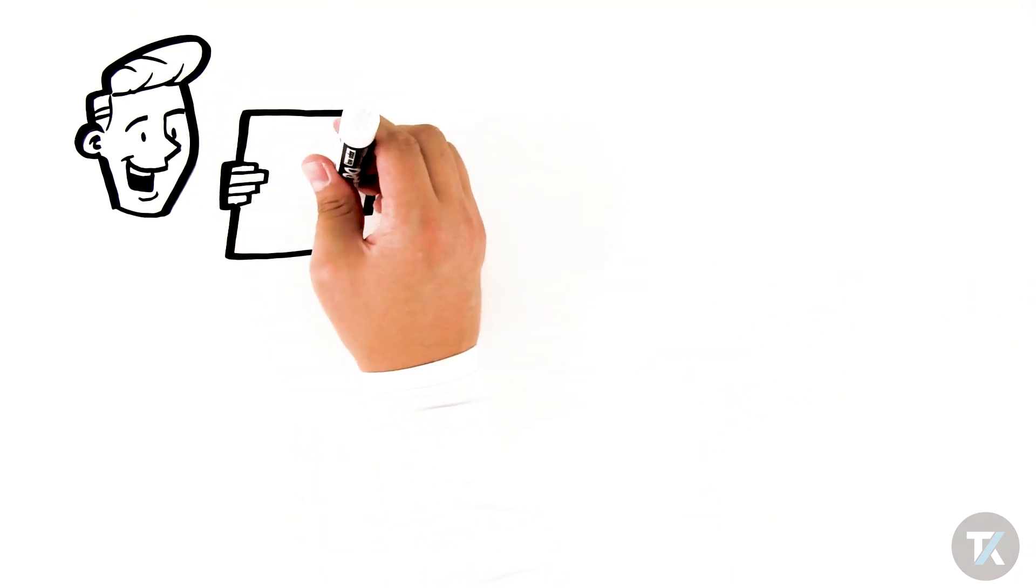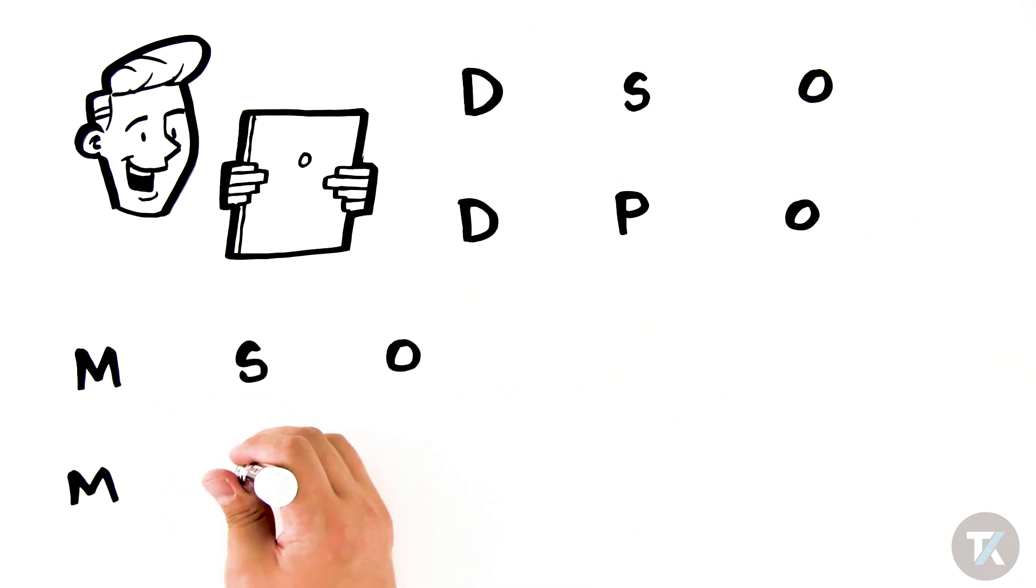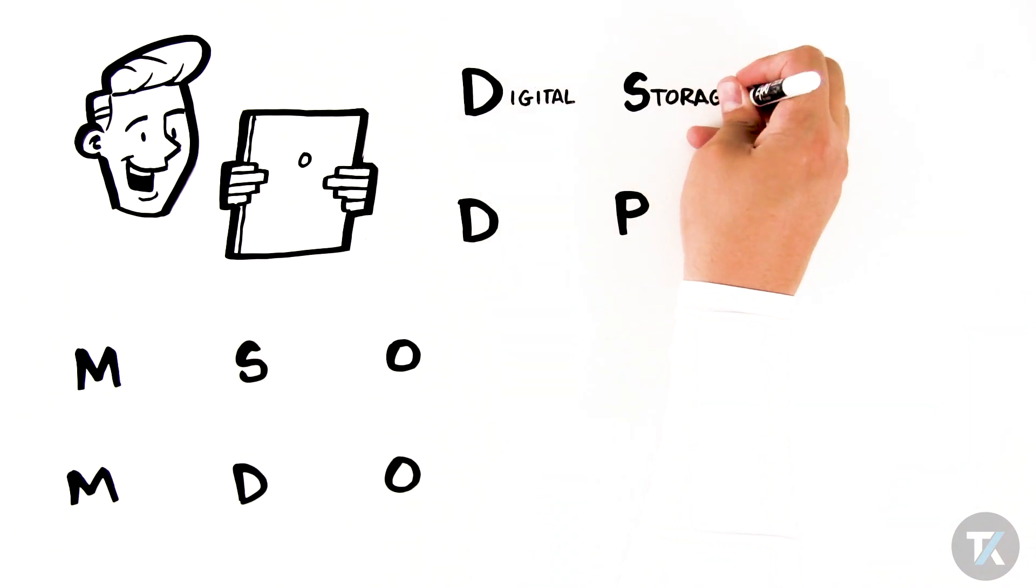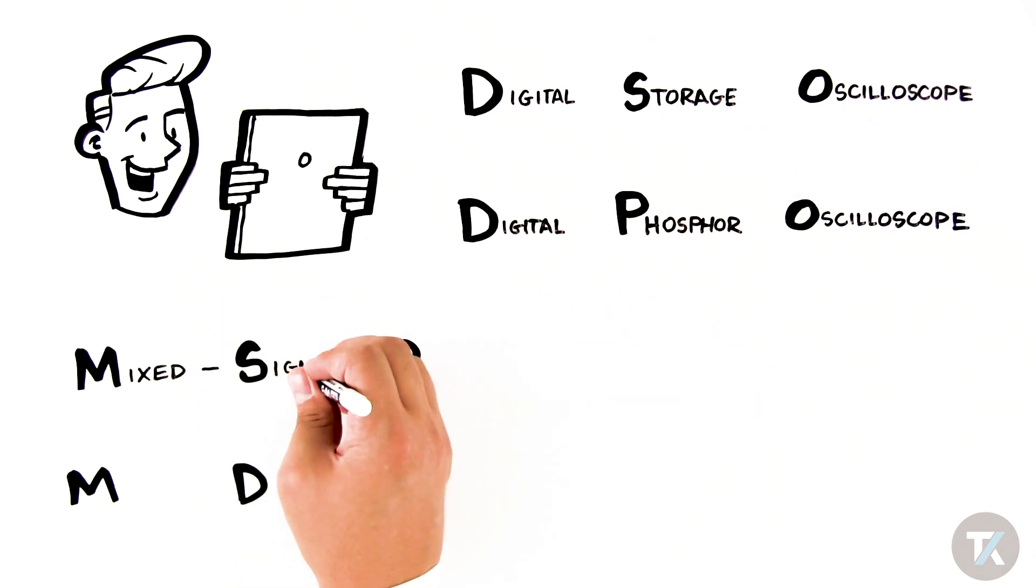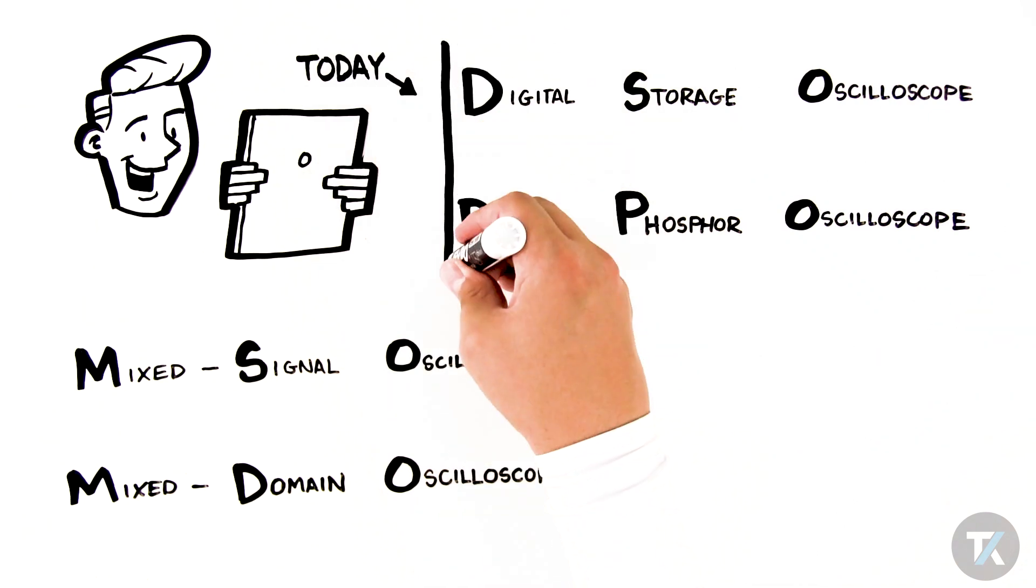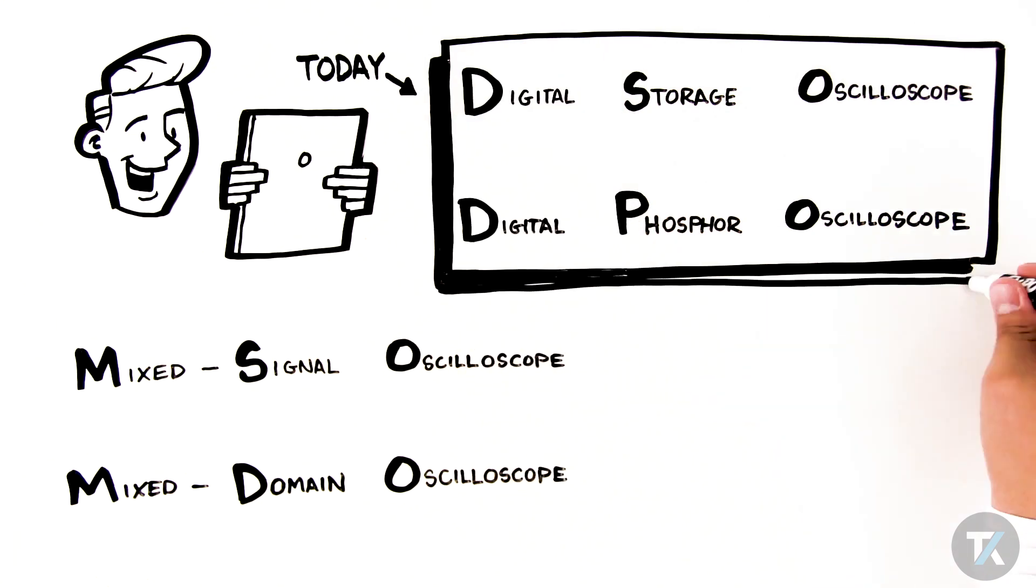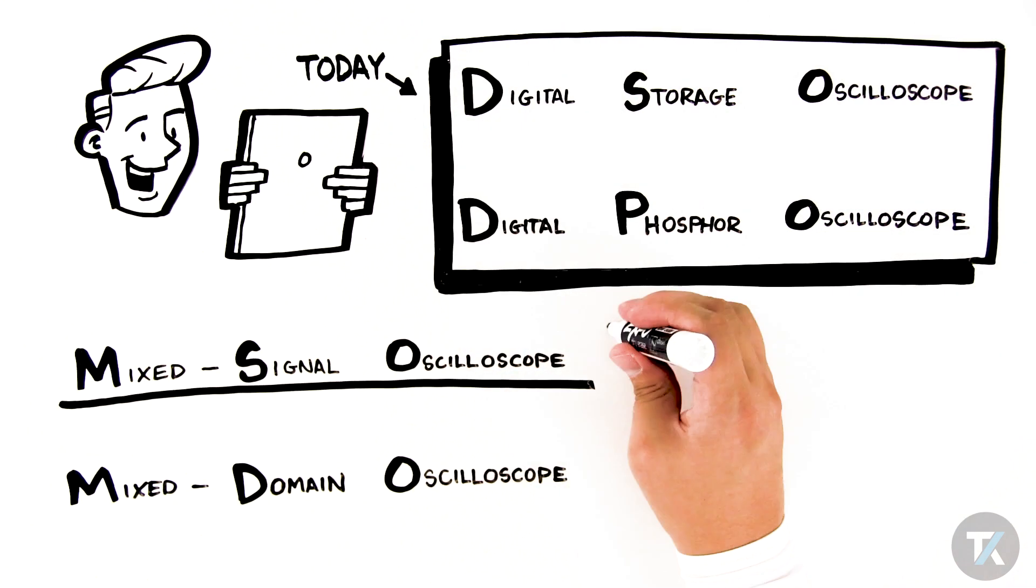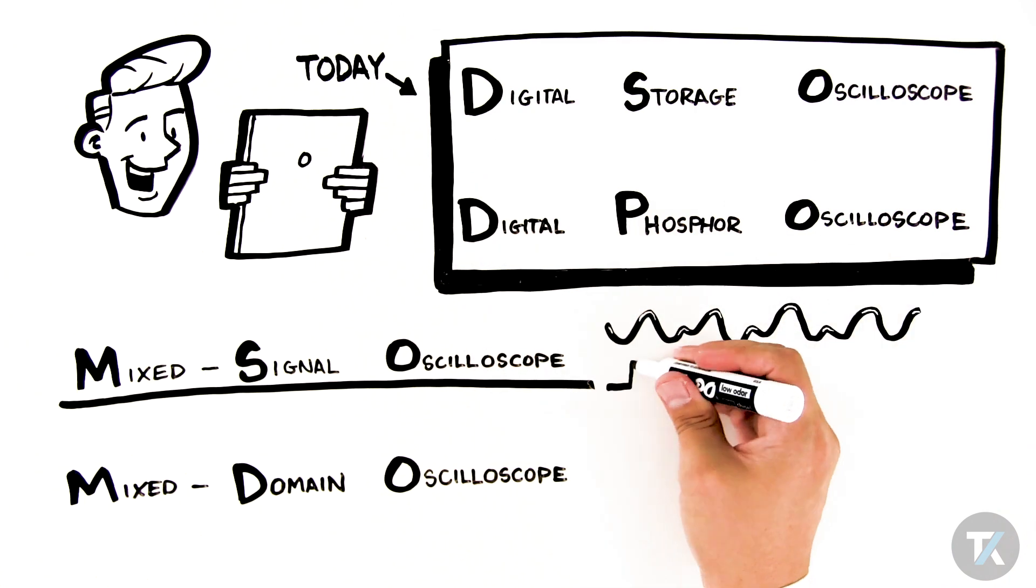You'll probably see different models referred to by their acronyms such as DSO, DPO, MSO, or MDO. These stand for digital storage oscilloscope, digital phosphor oscilloscope, mixed signal oscilloscope, and mixed domain oscilloscope. Most oscilloscopes in use today are DSOs or digital storage oscilloscopes, or DPOs, digital phosphor oscilloscopes.